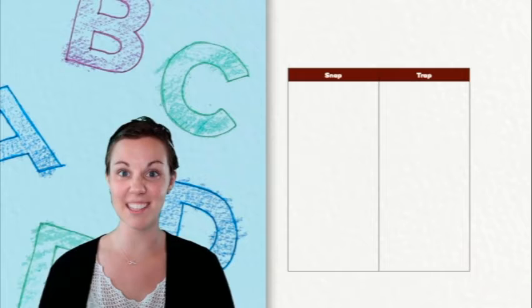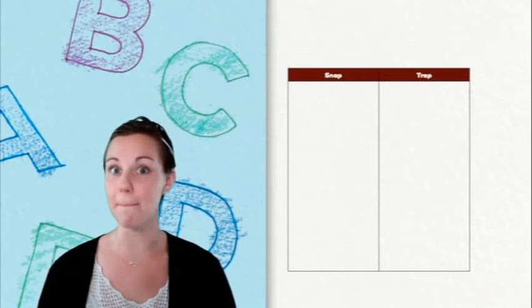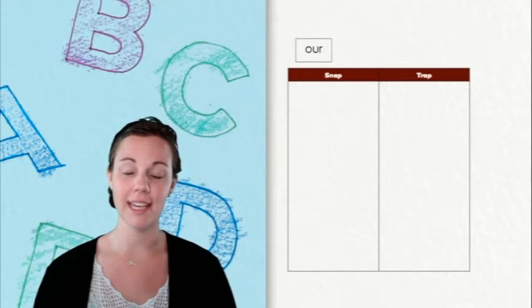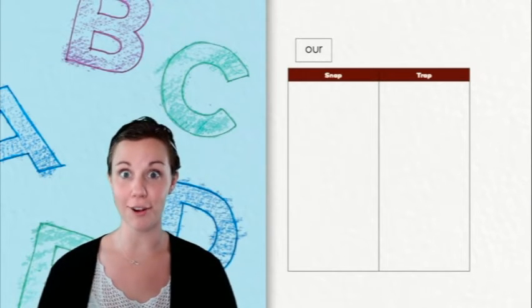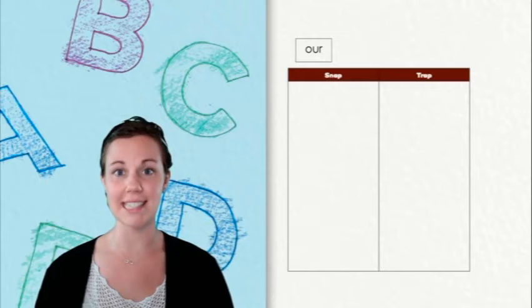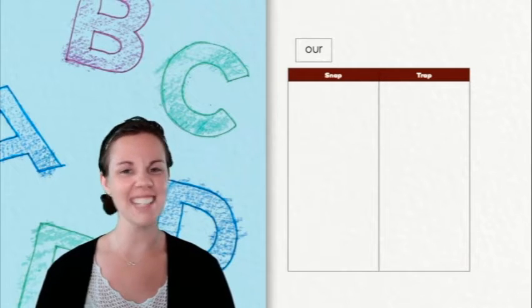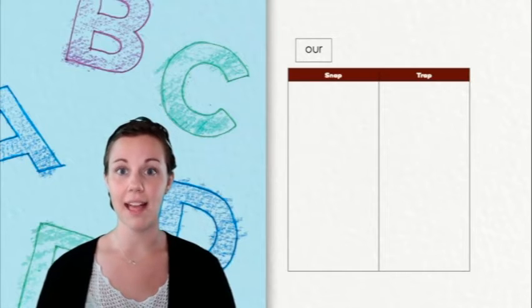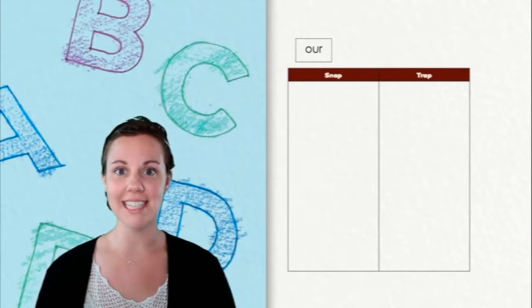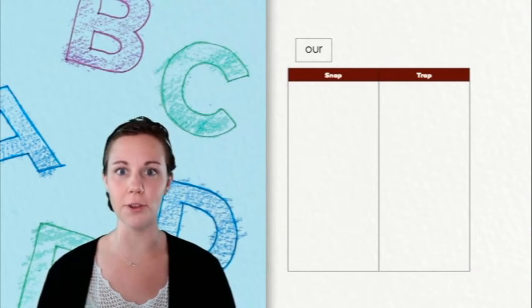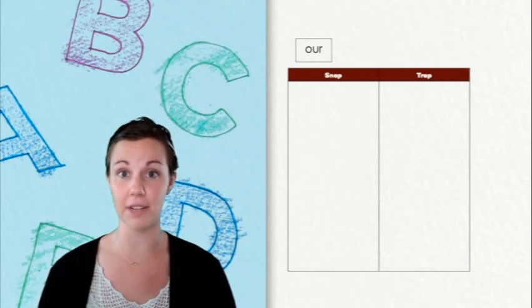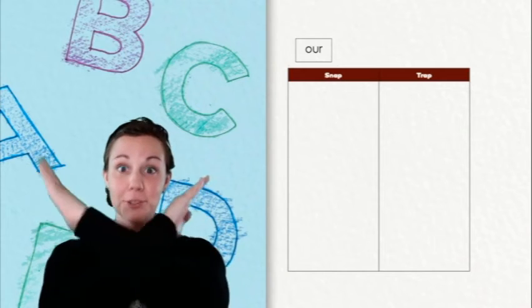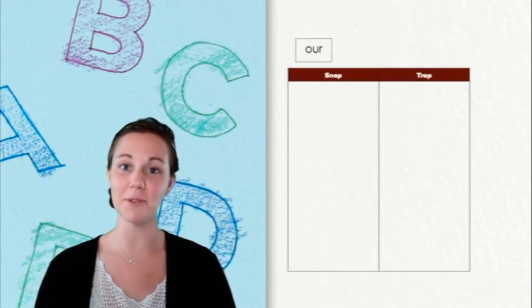Meaning it has something that doesn't match. Let's take a look at the first word. It says are. I'm noticing when I say that word I don't really hear those vowel sounds in the beginning. That bossy R is almost taking over the word, which makes it very hard to spell. That seems like a trap word. Let's move it into our chart.